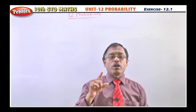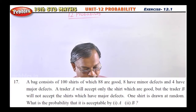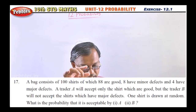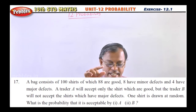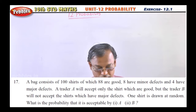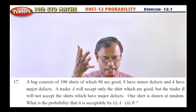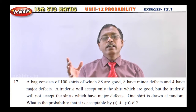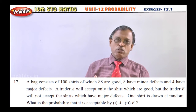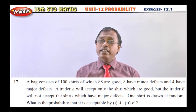Now listen, the 17th problem — a very easy problem. A bag contains 100 shirts of which 88 are good, 8 have minor defects (small defects), and 4 have major defects — meaning so many defects that we cannot wear that shirt. Nobody will accept that shirt.